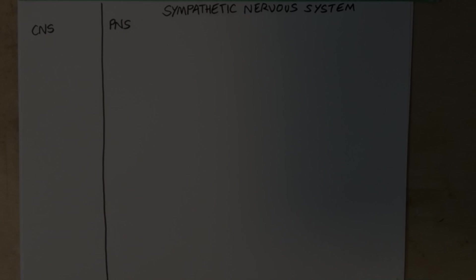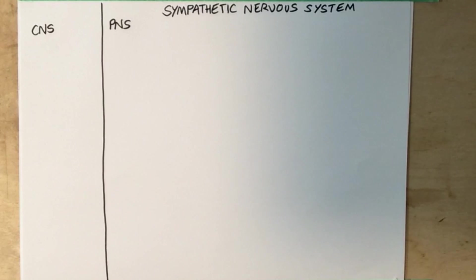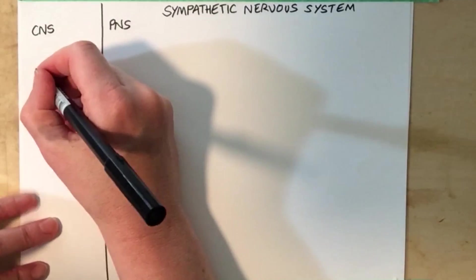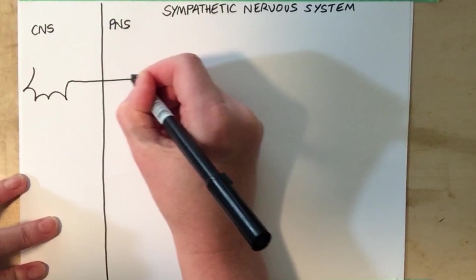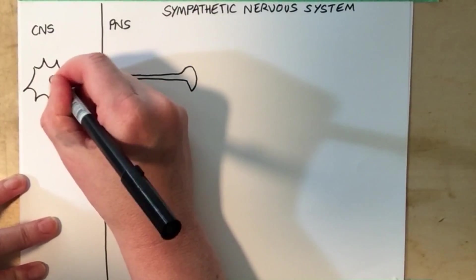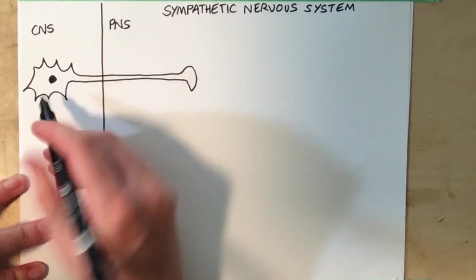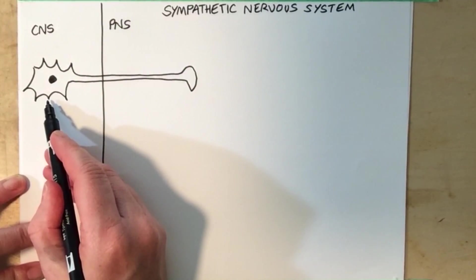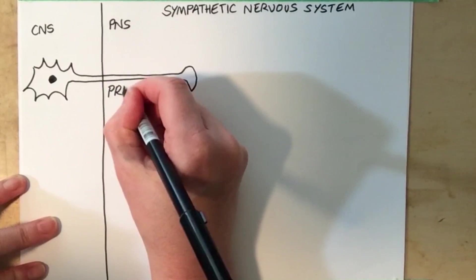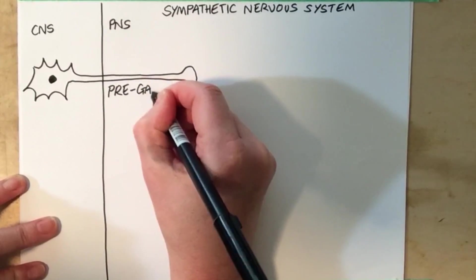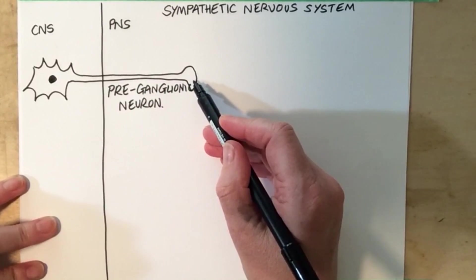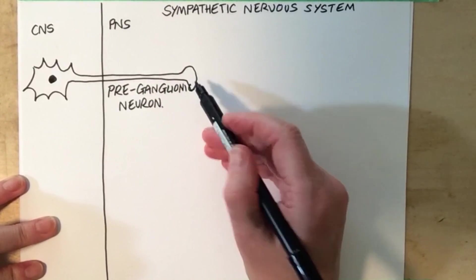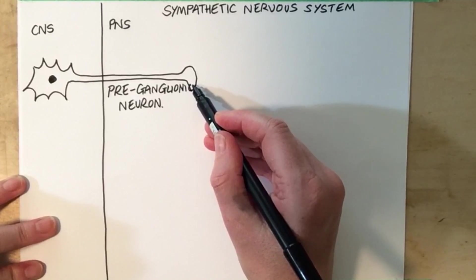Before we leave the sympathetic nervous system, I need to tell you about one more type of motor pathway. In this motor pathway, we still have a preganglionic neuron that extends an axon out into the peripheral nervous system. The cell body is still located within the spinal cord, and this is also still called the preganglionic neuron. However, instead of synapsing with another neuron, this preganglionic neuron synapses with the adrenal medulla.